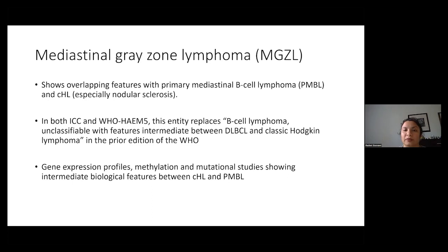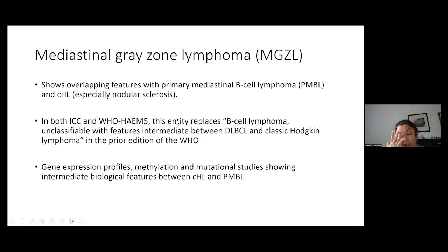One of the final large B cell lymphomas that's changed is this new entity known as mediastinal gray zone lymphoma. This used to be B cell lymphoma unclassifiable with features intermediate between DLBCL and classical Hodgkin lymphoma, and often shows overlapping features with primary mediastinal lymphoma and nodular sclerosing Hodgkin lymphoma. Based on molecular studies and gene expression profiling, the WHO authors felt this was its own entity. Because it shows intermediate biological features between the two, it's part of the spectrum — hence the moniker of gray zone lymphoma.